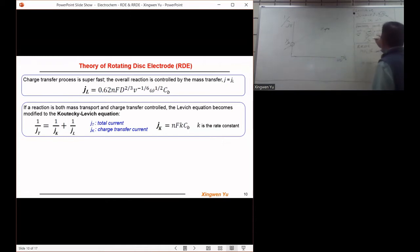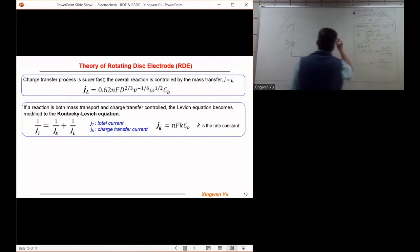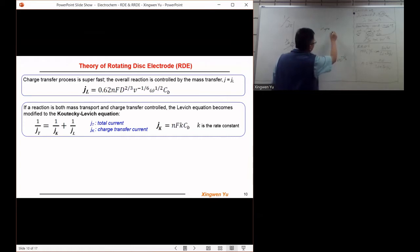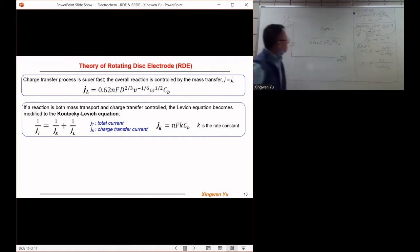The slope will be, if we take the one and the one out, the slope will be one over j_L and j_k. So the slope will be this.